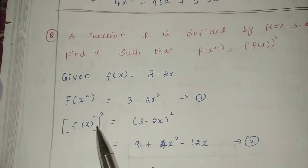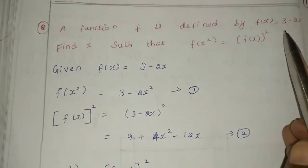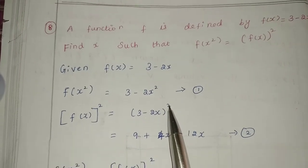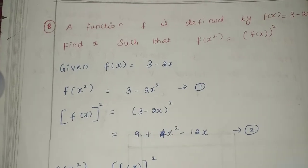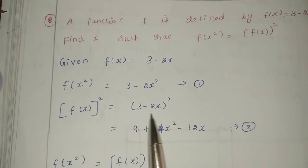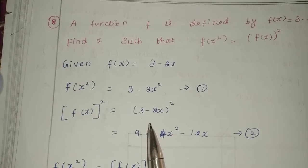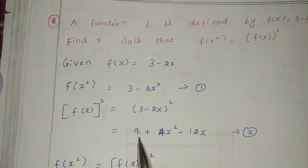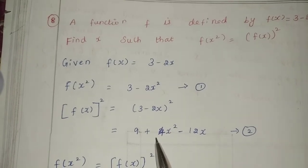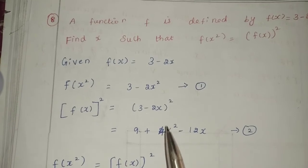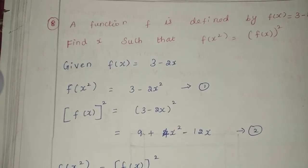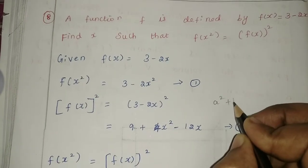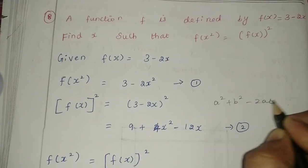Next, we find f of x the whole square. This is f of x squared, which takes the form of a minus b whole square. The formula is a squared minus 2ab plus b squared. Here a is 3, so 3 squared is 9. And b is 2x, so 2x whole squared is 4x squared.